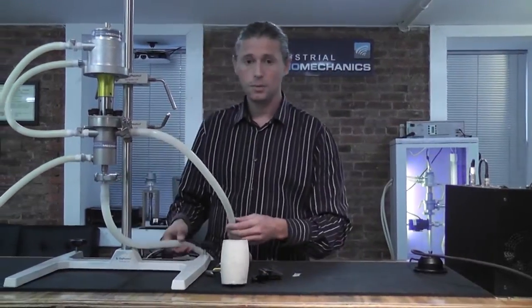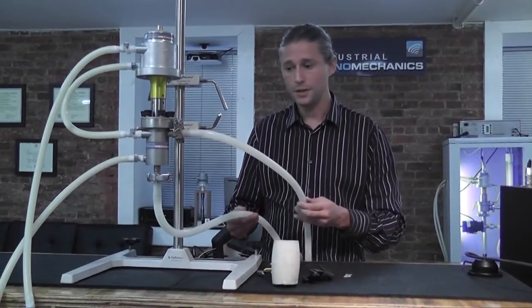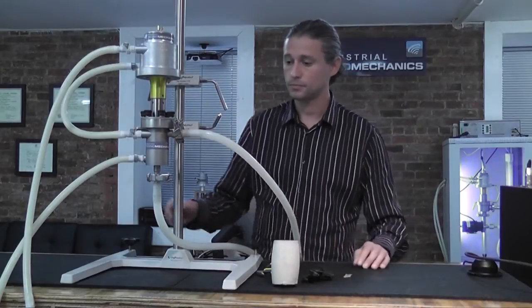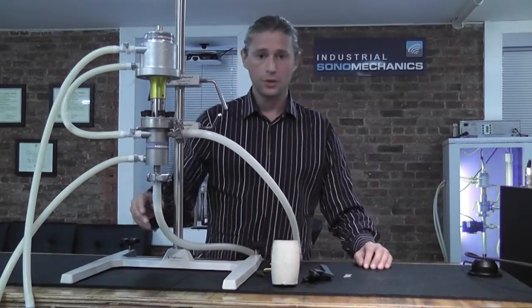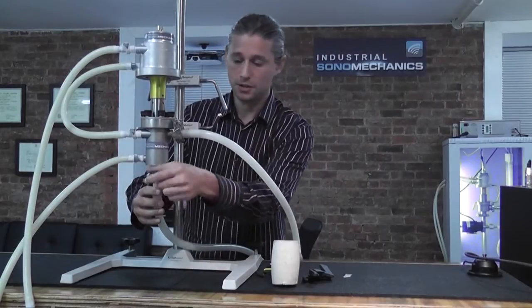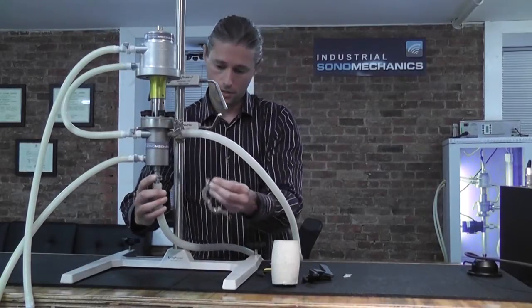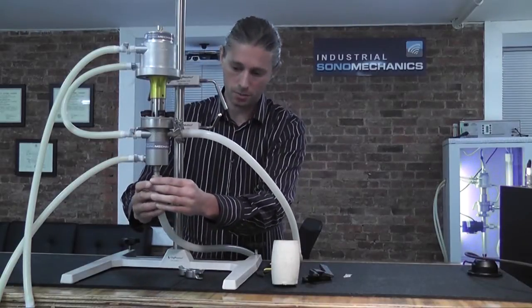Next, make sure there's no liquid in the main liquid lines. They need to be drained. When you make sure there's no liquid, you can disconnect these sanitary flanged half-inch connections. Sometimes they're also called tri-clamp connections.